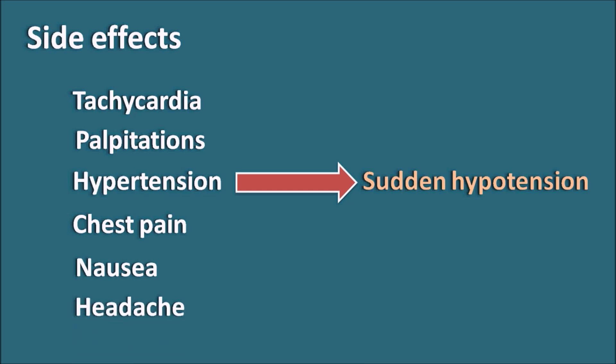In summary, Dobutamine is a drug with dual action. It shows main action on the beta-1 receptors with little effect on alpha-1 and beta-2 receptors. Even though it is structurally related to Dopamine, it has no action on dopamine receptors and does not produce renal vasodilatation. Its main effect on beta-1 receptors increases the force of contraction, thereby increasing cardiac output, with generally little chronotropic activity — though as the dose increases, the rate of contraction also increases.